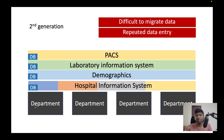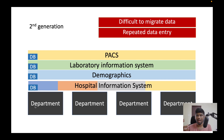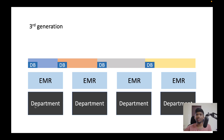Repeated data entry becomes a major problem in generation 2. Since you have multiple systems made by different people, each doing one thing, you have to enter the same data again and again. I've seen so many people enter a patient's name and date of birth in multiple systems — and the name might even be entered differently, introducing mistakes. This is a very common issue at this generation of EHRs.